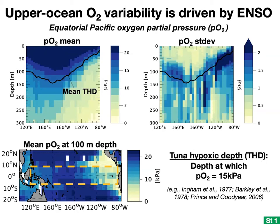What I call tuna hypoxic depth, or THD, shown in black on these figures, is defined as the depth below which PO2 falls under a threshold considered dangerous for skipjack and yellowfin tuna — the vast majority of tuna species caught here. The THD thus describes the amount of oxygenated vertical habitat space available to tuna in the upper ocean. The threshold used was 15 kilopascals, based on a range of lab and field studies.